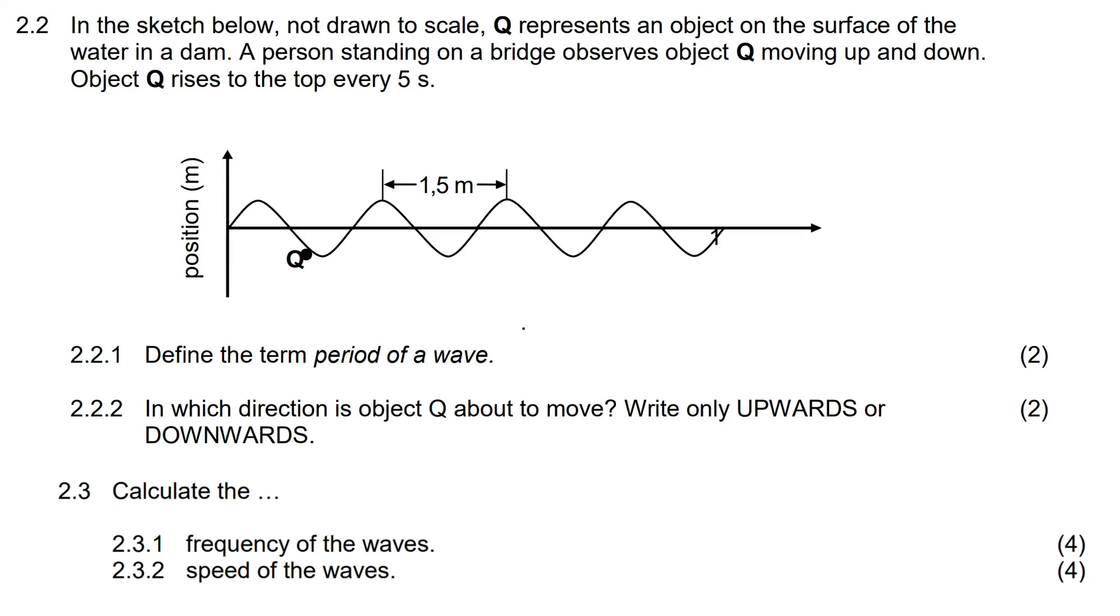In the sketch below, which is not drawn to scale, Q represents an object on the surface of the water in a dam. A person standing on a bridge observes object Q moving up and down. Object Q rises to the top every five seconds.